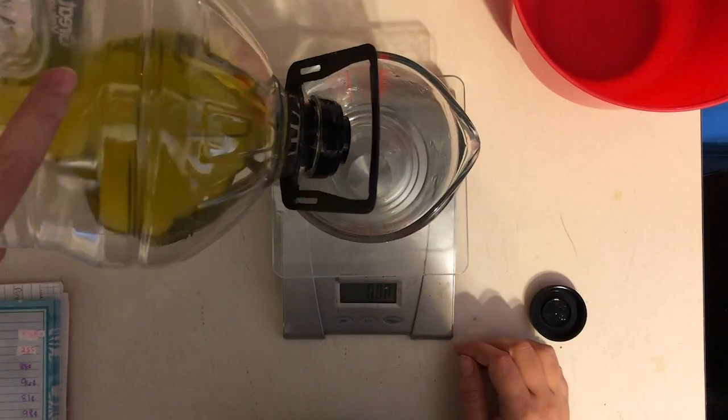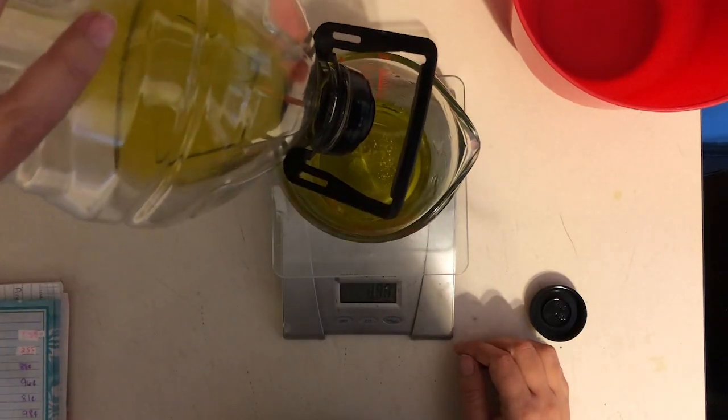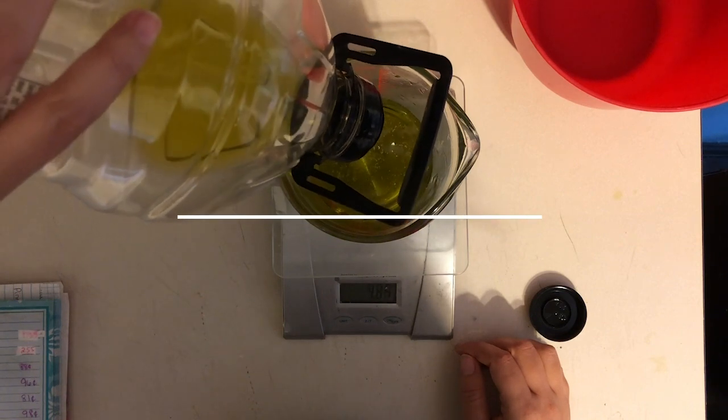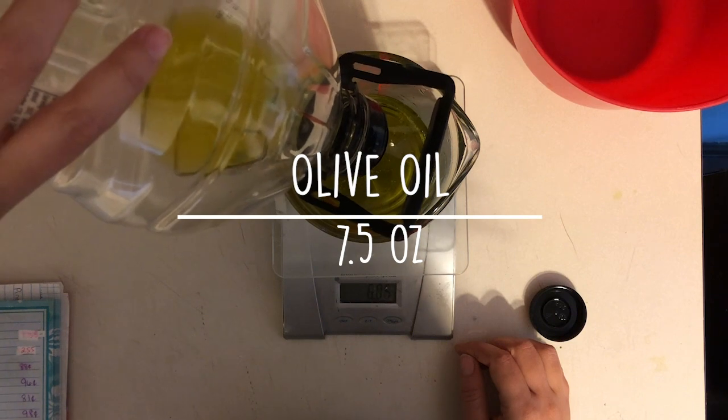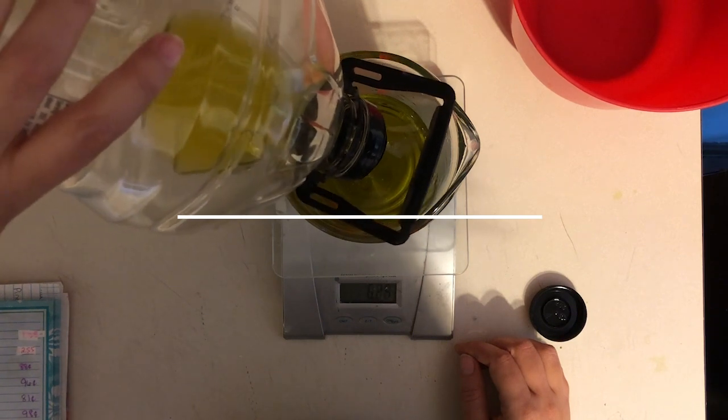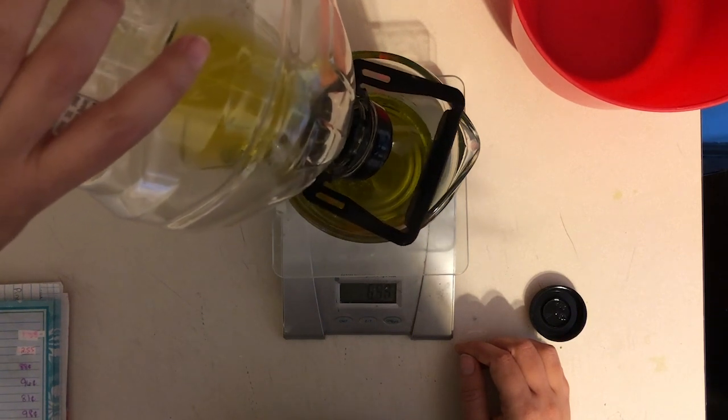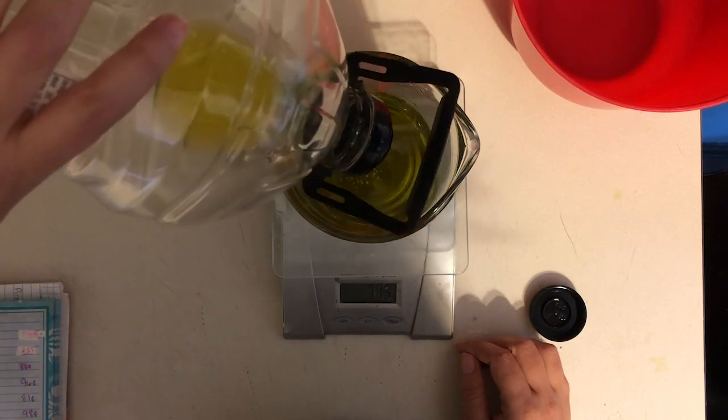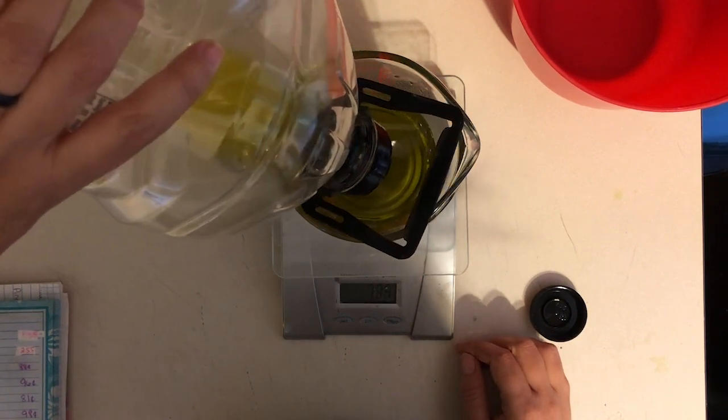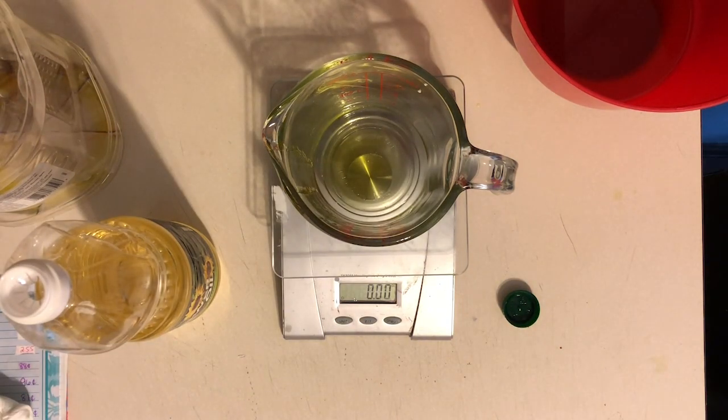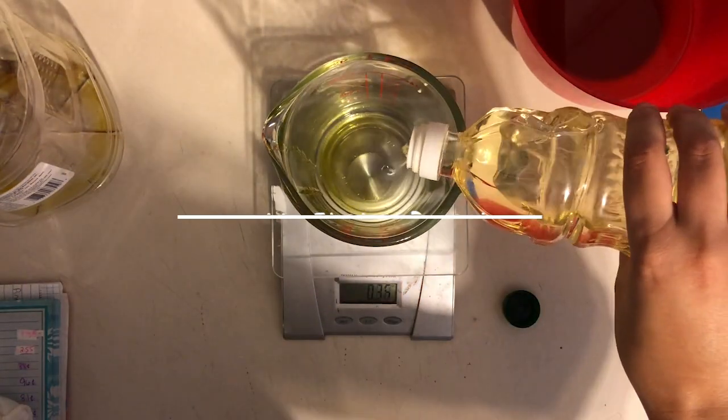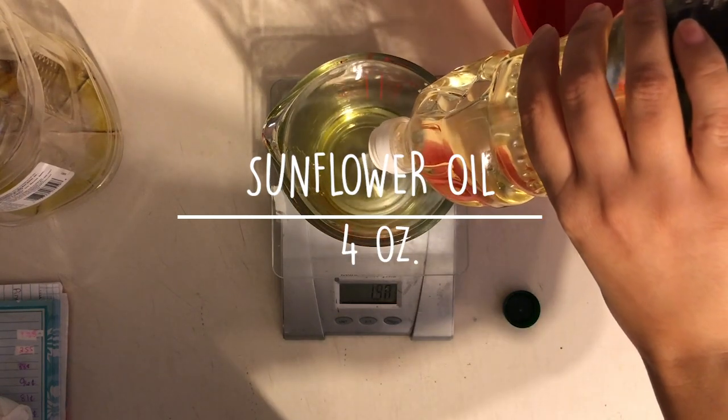Now we're going to measure all the oils for the soap. It's a really basic recipe. First, we'll do olive oil at 7.5 ounces. After the olive oil, we'll add sunflower oil at 4 ounces.